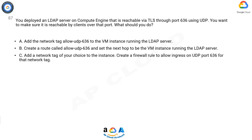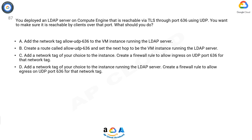C. Add a network tag of your choice to the instance. Create a firewall rule to allow ingress on UDP port 636 for that network tag. D. Add a network tag of your choice to the instance running the LDAP server. Create a firewall rule to allow egress on UDP port 636 for that network tag.